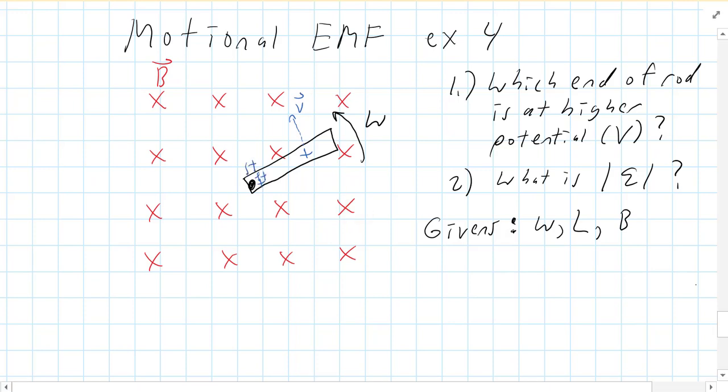your thumb will point toward the center of the circle. So what will end up happening is this end of the bar will have a bunch of positive charge stuck to it, and that'll leave a bunch of negative charge back here. Now, again, what really happens is the electrons get moved and the protons stay still, but we'll pretend it's positive charge here.